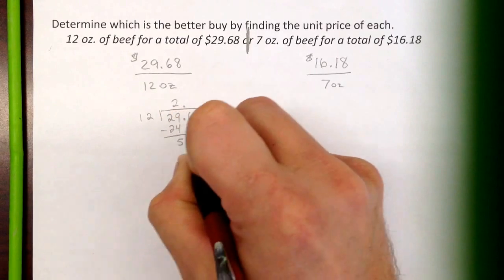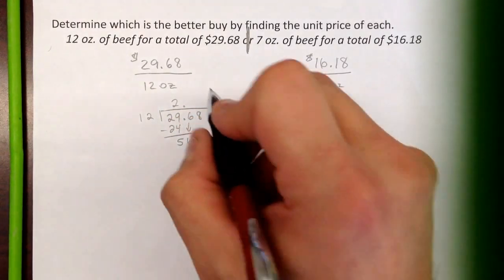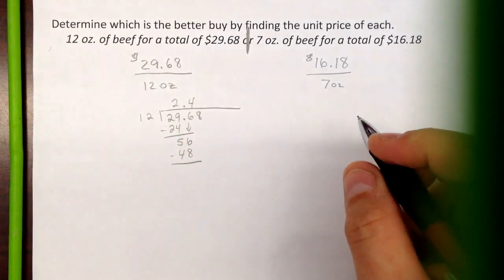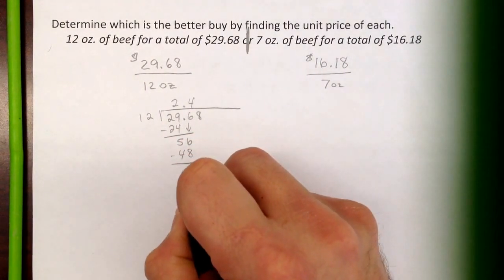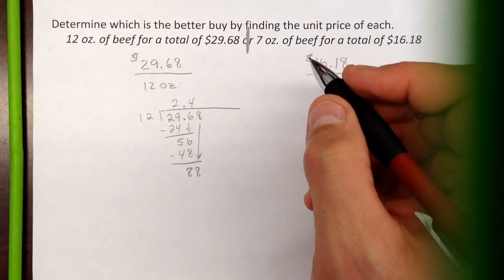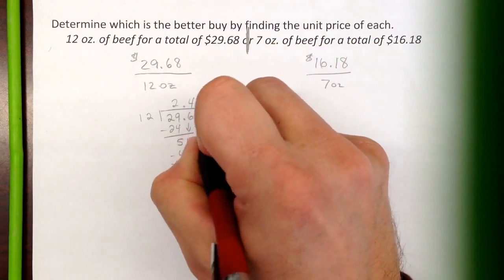24. We get a 5, bring down the 6. And then we go in four times. That would be 48. Subtracting, getting an 8. Bring down an 8. Let's see, 7 times, I believe, times 7 is 84.